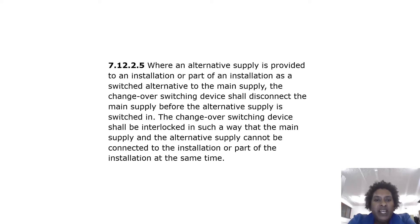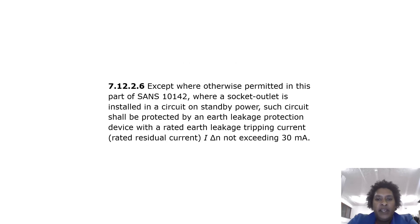Where an alternative supply is provided as a switched alternative to the main supply, the changeover switching device shall disconnect the main supply before the alternative supply is switched in. The changeover switching device shall be interlocked so that the main supply and the alternative supply cannot be connected at the same time. Where a socket outlet is installed in a standby power circuit, such circuits shall be protected by an earth leakage protection device with a rated earth leakage tripping current not exceeding 30 milliamps.